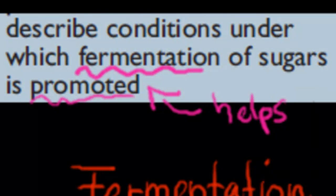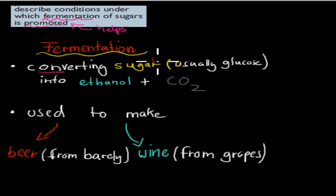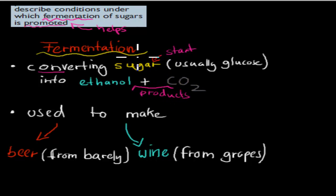Fermentation is converting sugar — usually glucose — into ethanol and carbon dioxide. Sugar is our reactant and ethanol and carbon dioxide are our products. That's fermentation: going from sugar into ethanol and carbon dioxide, and usually we have a yeast to make that happen.